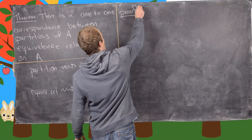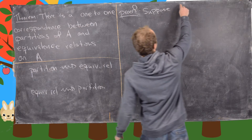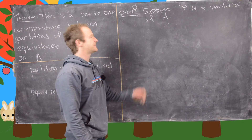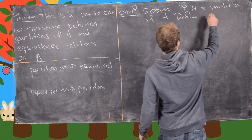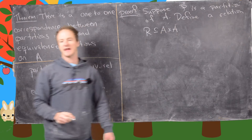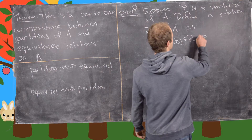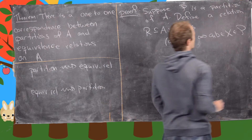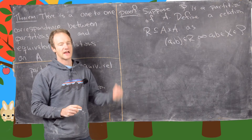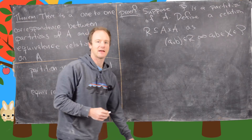Let's look at the proof. First, let's suppose P is a partition of our set A. We define a relation R on A — that is, a subset of A × A — where (a, b) is in R if and only if a and b are in the same part of the partition. So a and b are related if and only if they come from the same part of the partition.